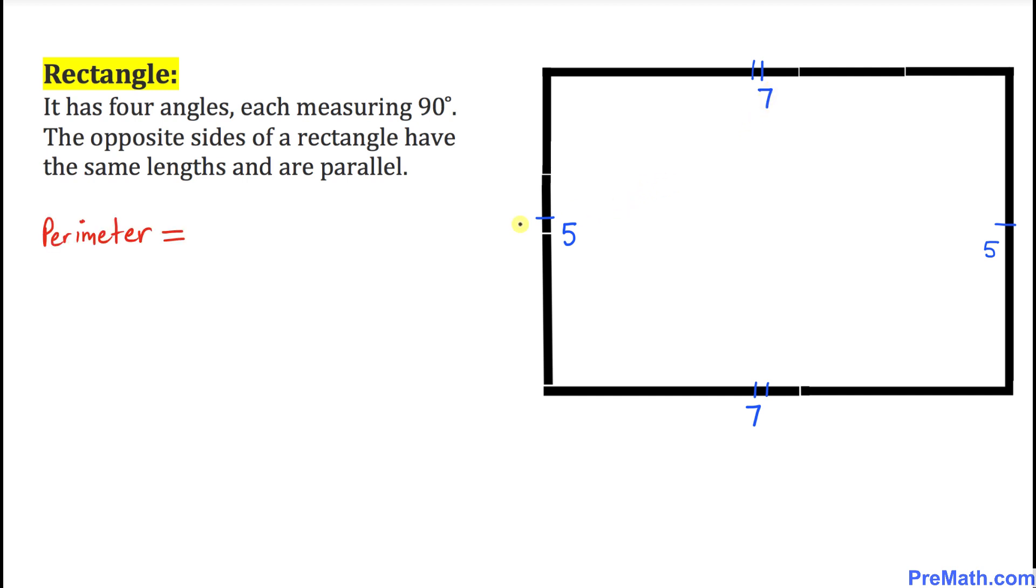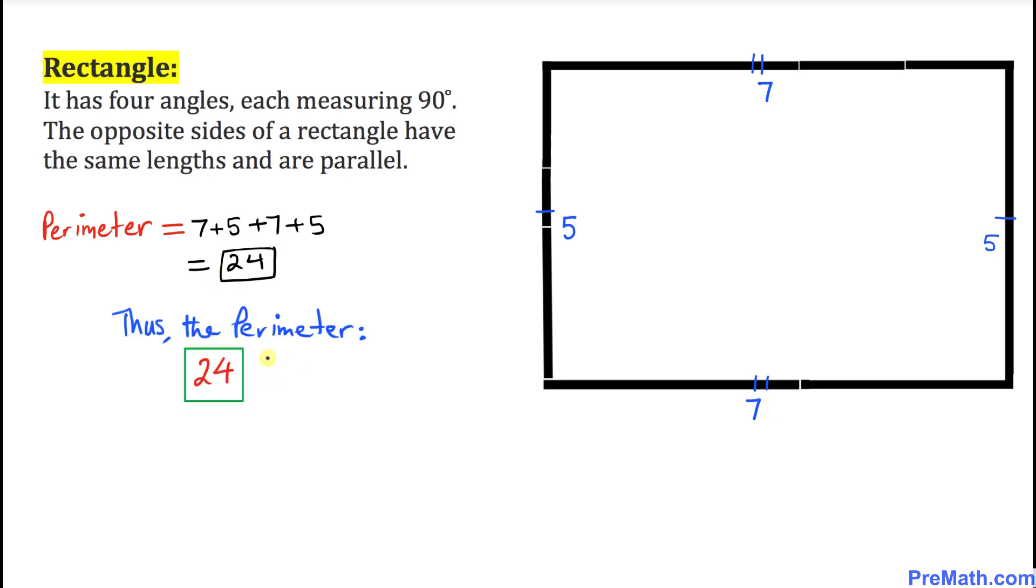Now we can easily calculate the perimeter of this rectangle by simply adding these all sides. So let's go ahead and add this one. I'm going to put down 7 plus 5 plus 7 plus 5, and that is going to give us 24 units. So that's the perimeter of our given shape, turns out to be 24.